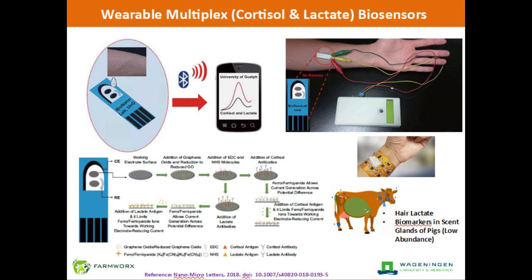But how do we translate this technology to animals? Animals do not have sweat glands. However, patches can be developed and placed on the snouts of pigs, on specific body portions like reproductive organ discharge, or the nasal discharge of cows, to understand what is being secreted. Some of these wearable sensors can help us move from reactive to predictive through a proactive approach.